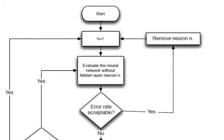Then we make a decision. Is the error rate acceptable? If it is, then we remove neuron n and we start the process over again. Is the error rate not acceptable? We'll continue and we'll move on to the next part of the chart if the error rate is not acceptable.